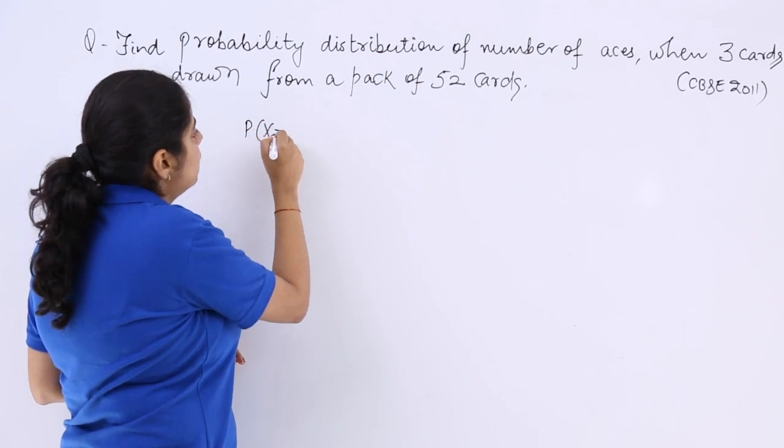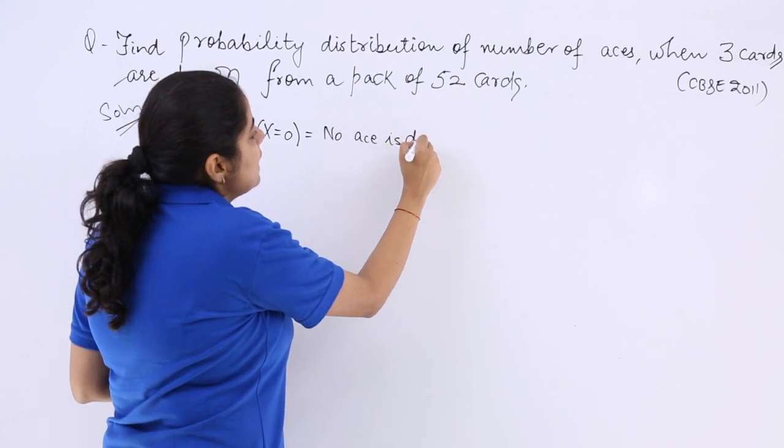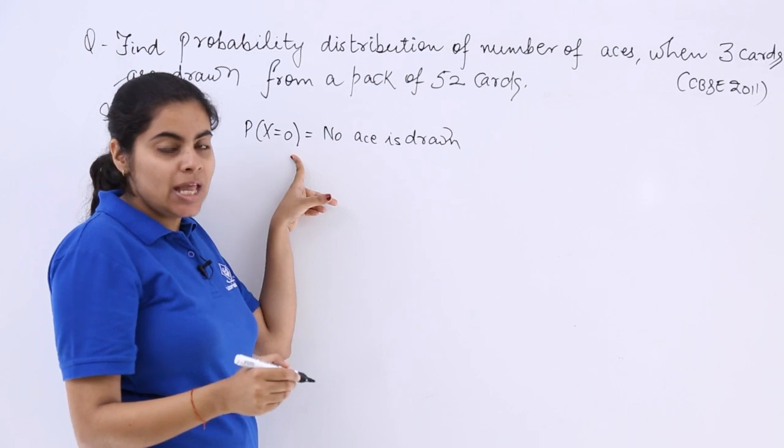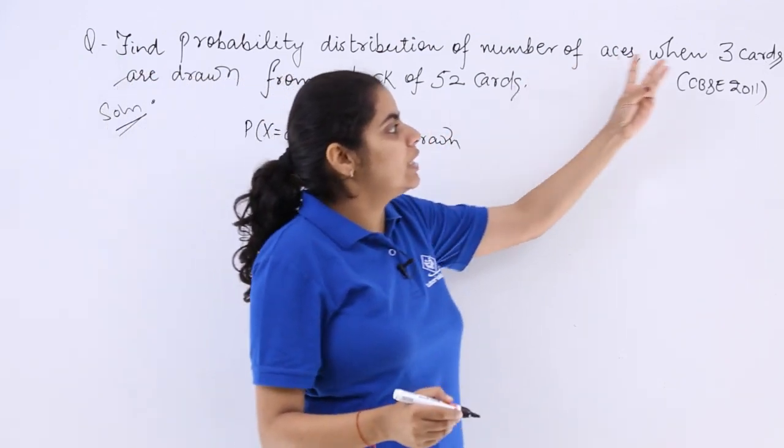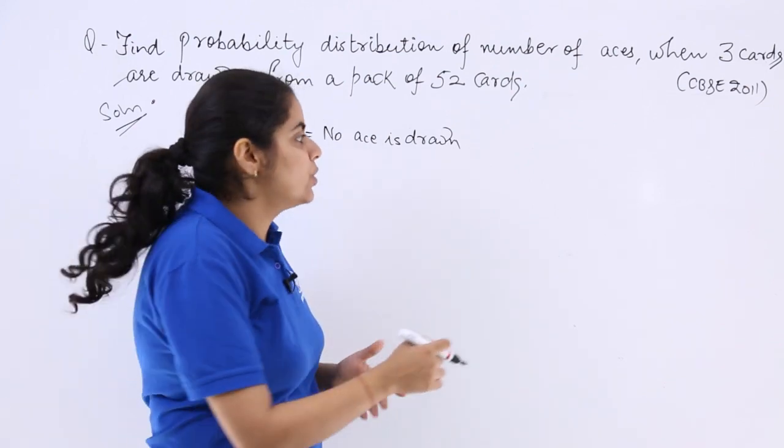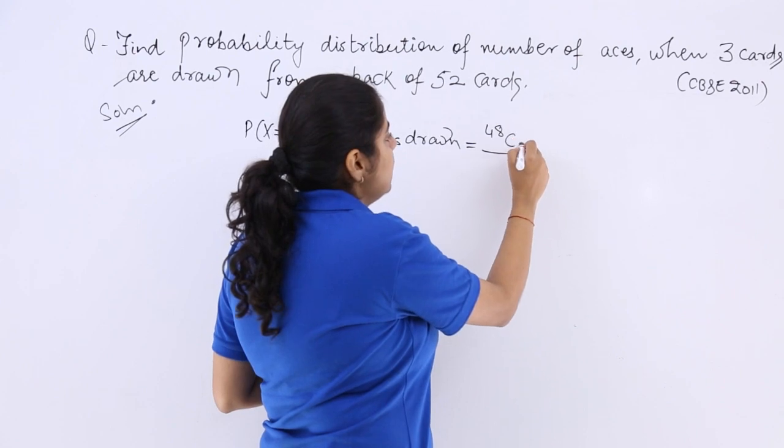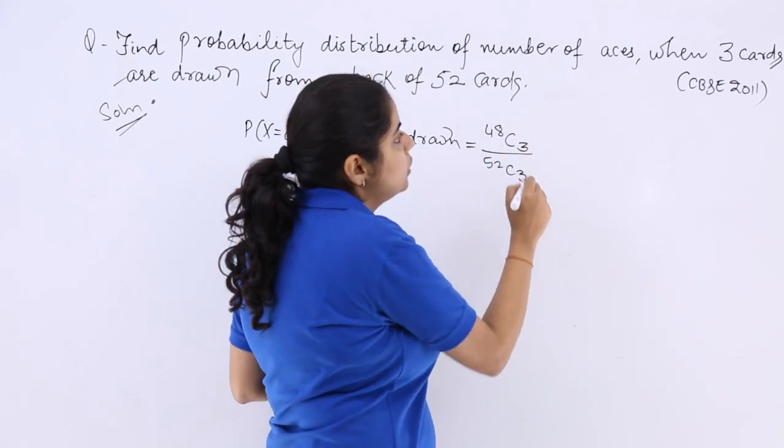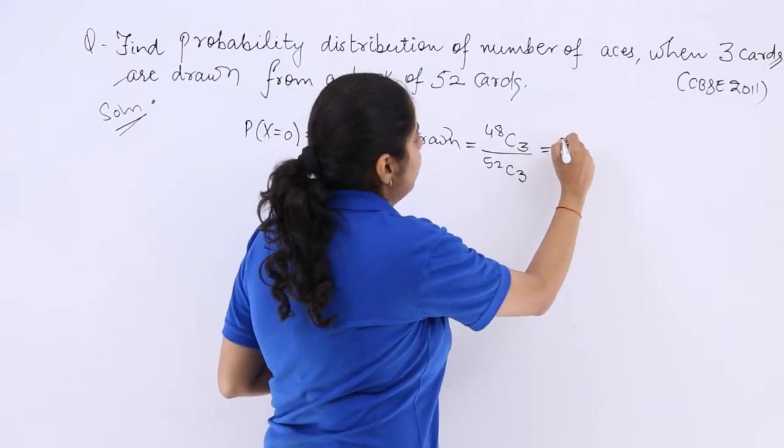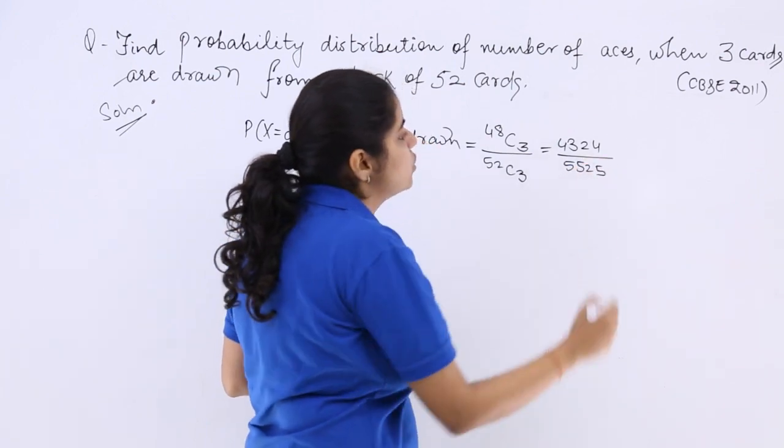So what are the different cases possible? The first is the condition when you see that no ace is drawn. If no ace is drawn, we denote it like this: X is equal to 0. That means whatever the three cards are drawn out are from the non-ace section. So that means they are from the 48 remaining cards. So 48c3 over 52c3. This will come to be 4324 over 5525.